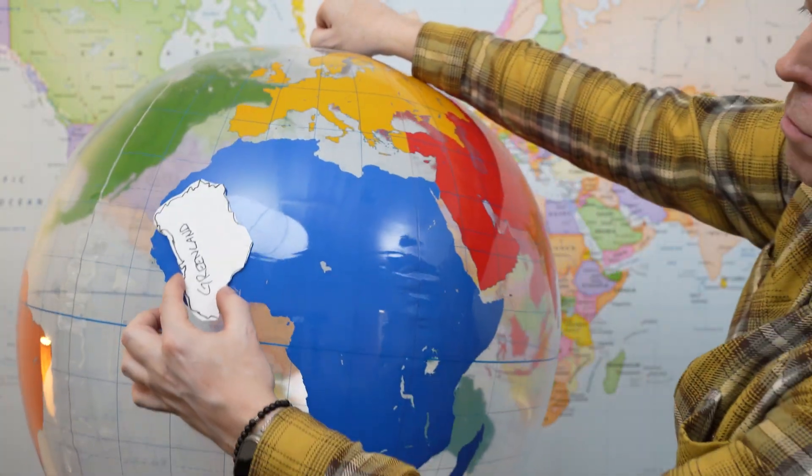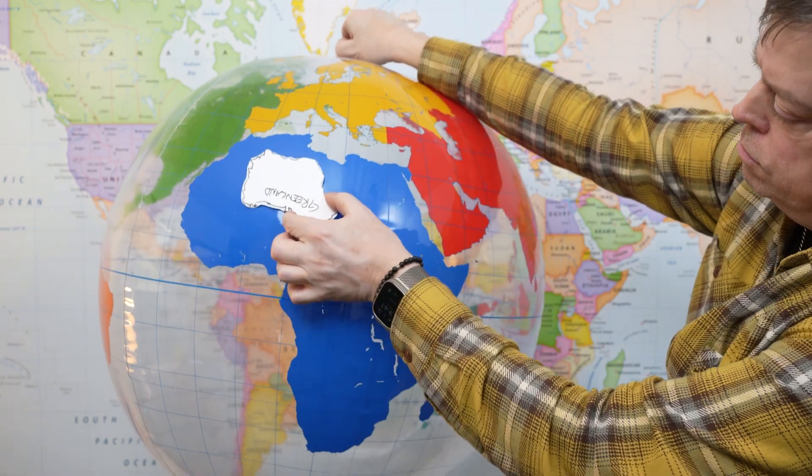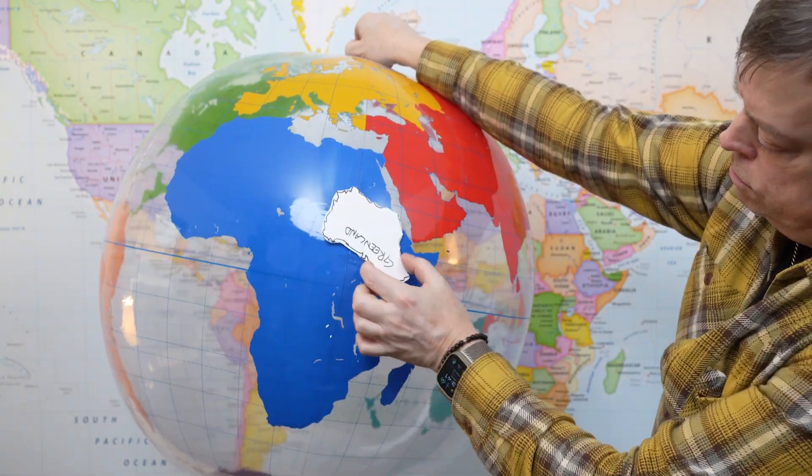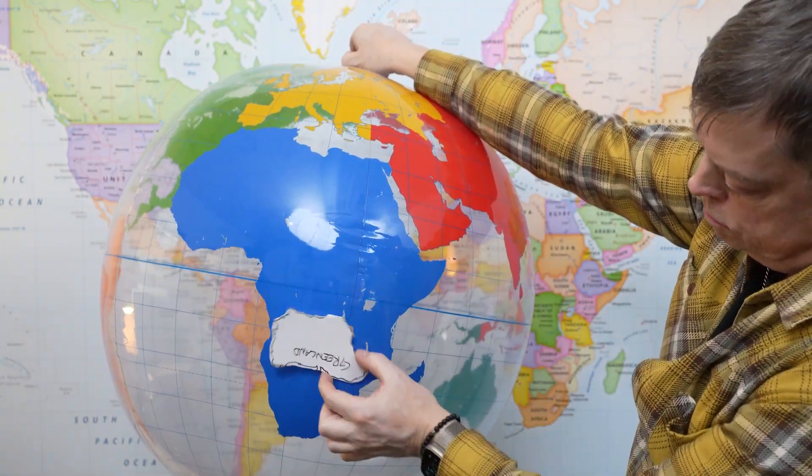Now, here's what these places actually look like when you correct for the distortion. Africa. The entire United States fits inside of Africa. So does China. So does India. You could fit most of Europe in here too and still have room left over. Africa is absolutely massive.